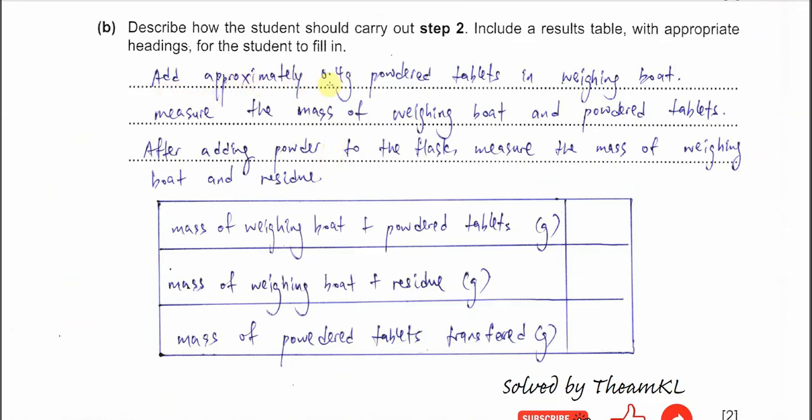Add approximately 0.4 grams of powder tablets into the weighing boat and measure the mass of the weighing boat and powder tablet. This is the first mass that we need to measure. After adding powder to the flask, then we measure the mass of the weighing boat and residue. Because after pouring, some powder will be on this weighing boat. We use the first one minus the second one, we will get the mass of powdered tablets that transferred into the flask.